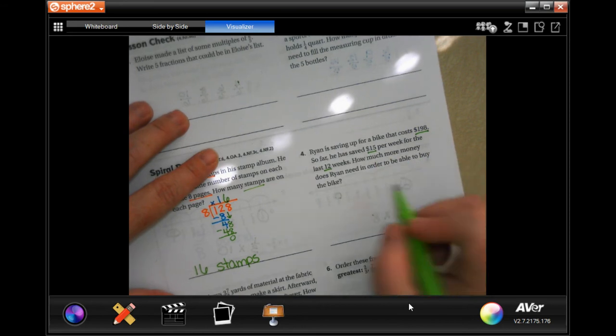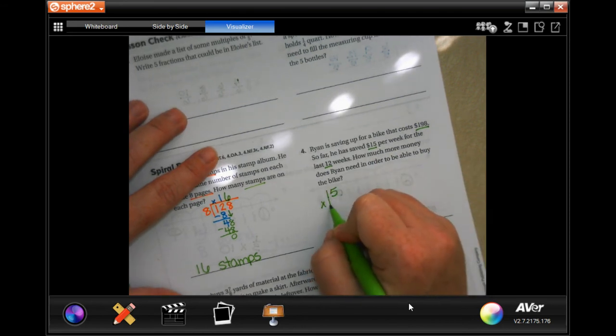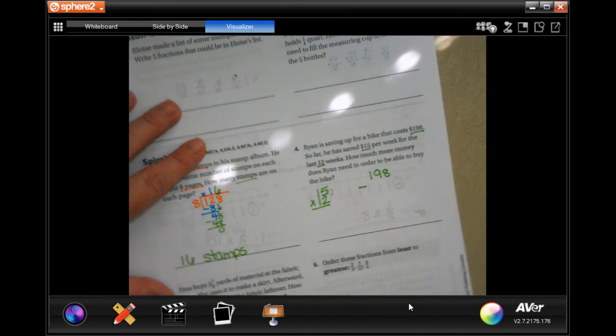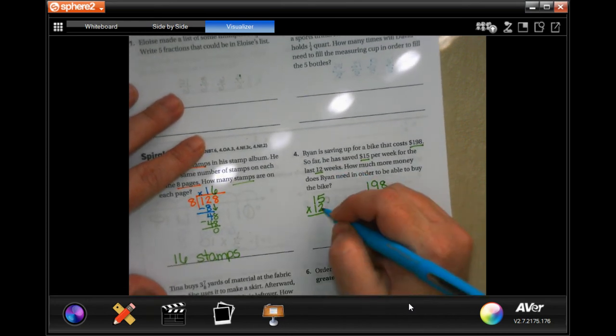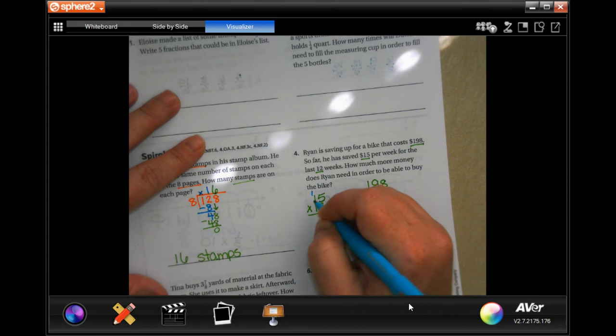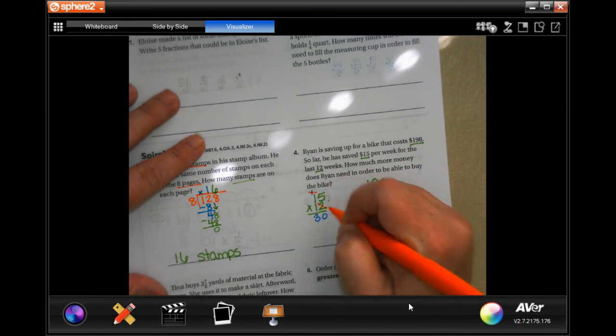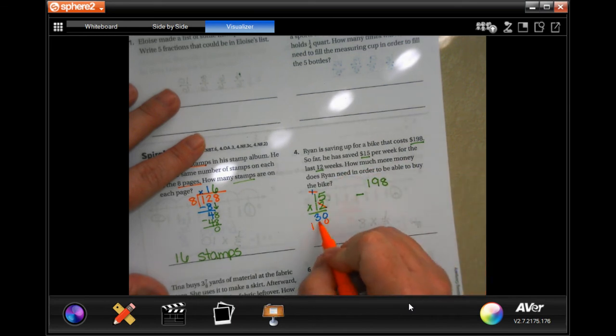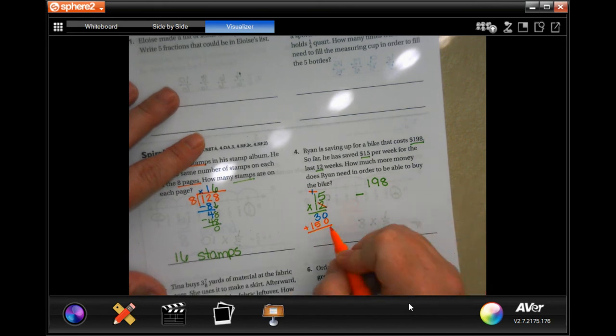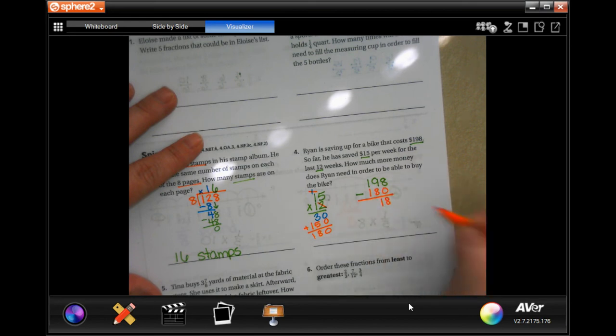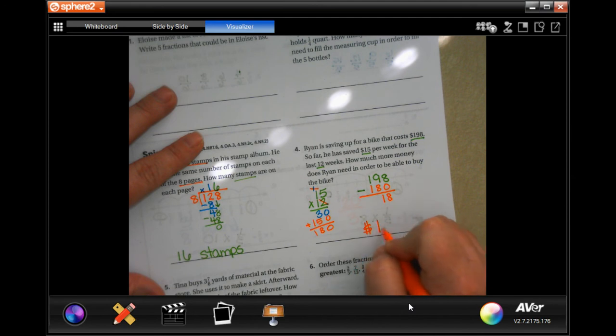So first we need to find out how much money he has and then we need to subtract it. So 15 times 12, and then 198 subtract however much we have there. So two times five, ten, carry that one. Two times one is two, plus one more is three. We're going to tick check that and toe, and then one times 15, and we're going to add those up. Zero, eight, one, so 180. Subtract, eight minus zero, eight, and nine minus eight is one, and then one minus one is nothing. So 18 dollars.